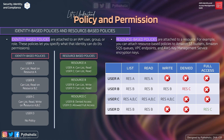For User C: it can perform list, read, and write on Resources A, B, and C from the identity-based policy. On Resource A there is also a resource-based policy allowing User C to list and read, but there are no other resource-based policies for User C on Resources B and C. So the identity-based policy governs, and User C has list, read, and write access on all three resources — A, B, and C.